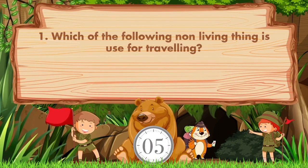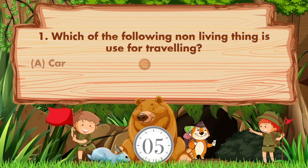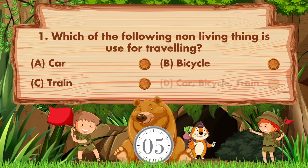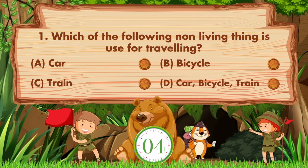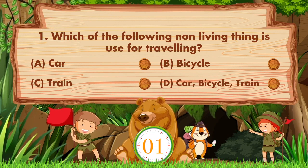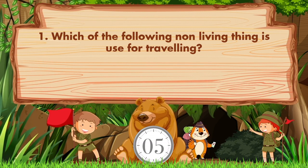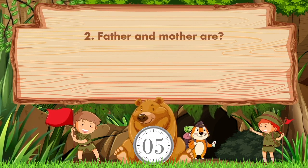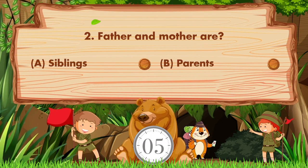Which of the following non-living things is used for traveling? Option A is car, B bicycle, C train, D car. Answer is option D: car, bicycle, train.